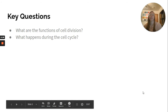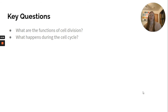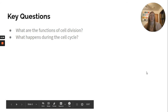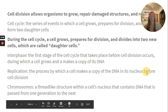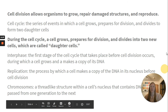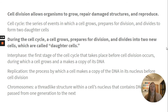Our two key questions: what are the functions of cell division, and what happens during the cell cycle? Cell division allows organisms to grow, repair damaged structures, and reproduce. The cell cycle is the series of events in which a cell grows, prepares for division, and divides to form two daughter cells.